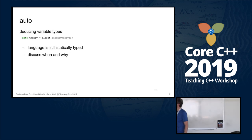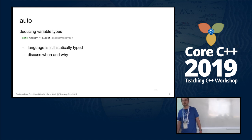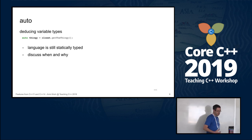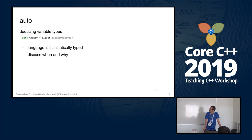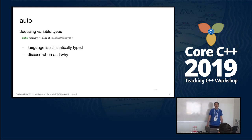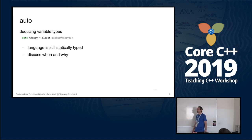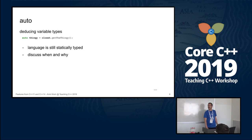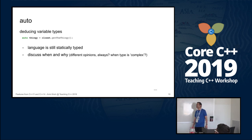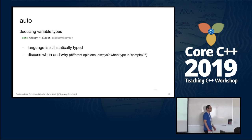We come to `auto`, and we say it can help you deduce the right type of variables without specifying the type yourself. It's nice — the compiler tells you the type. I still have to say the language is statically typed, and they understand that. Some already know JavaScript or Python, and I say: no, we are not a scripting language. `auto` didn't change that — we are still statically typed. Then I have to discuss when to use it and why.